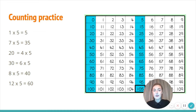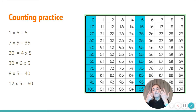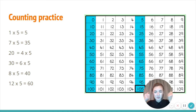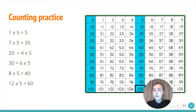Six times five. I can count in fives — I've got six fingers: five, ten, fifteen, twenty, twenty-five, thirty. I think I'm finding my fingers the easiest way. I wonder what way you're finding the easiest.